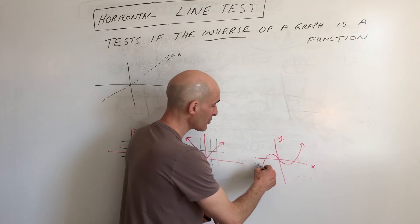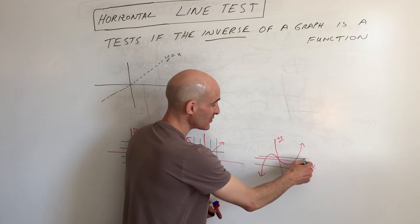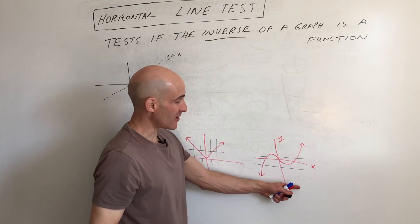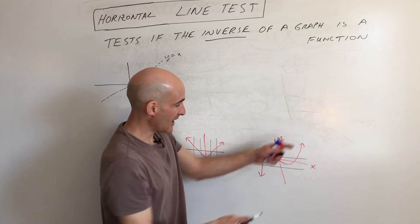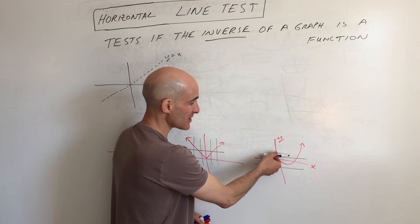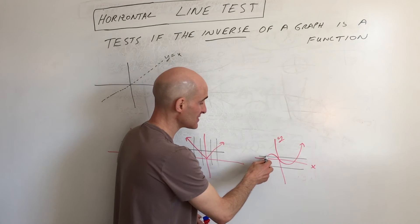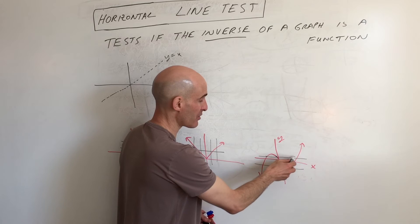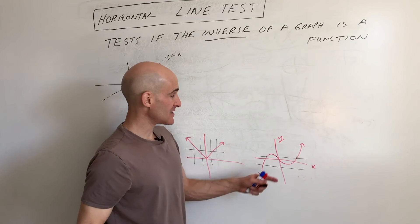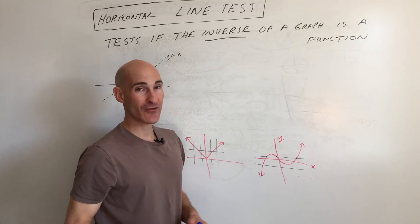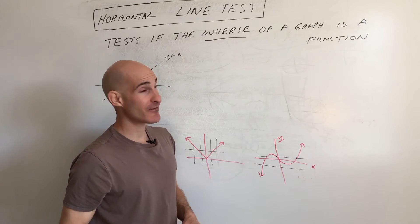Same thing here — horizontal line test passes there, but you can see it fails there. As we scan from low to high and take a horizontal line, if it crosses at more than one point — here you can see it's actually crossing at three — that fails the horizontal line test. It means that this graph's inverse is not a function.